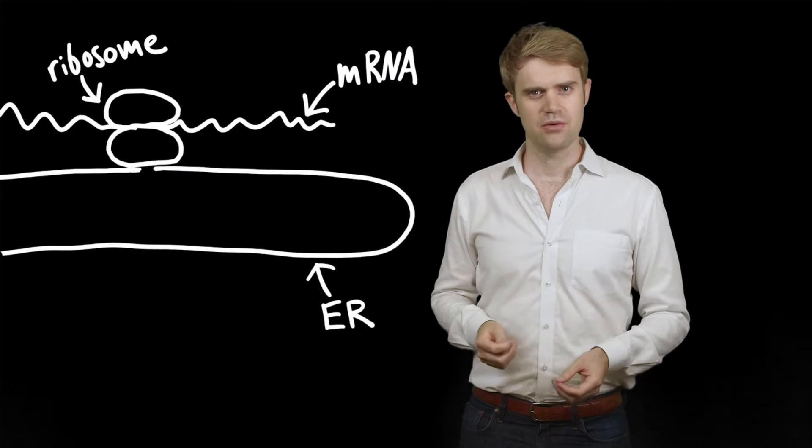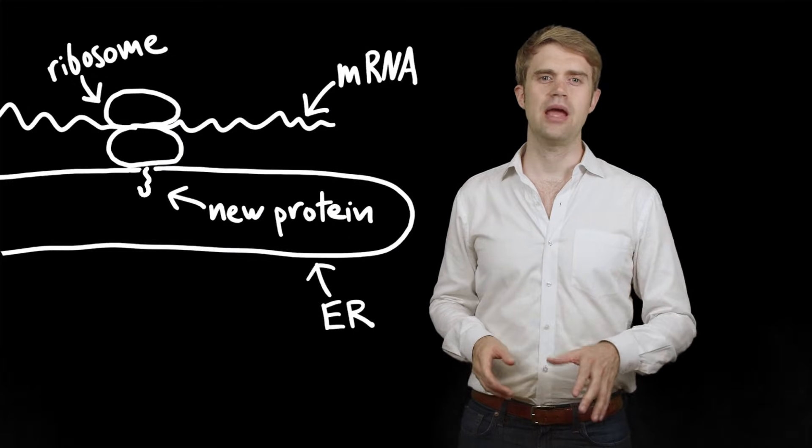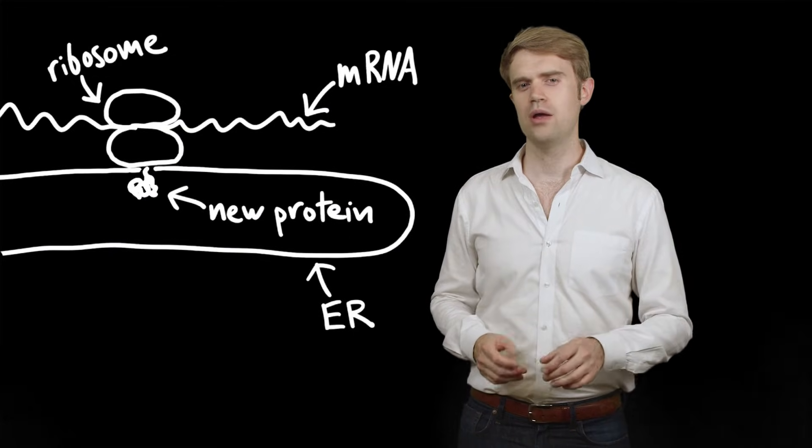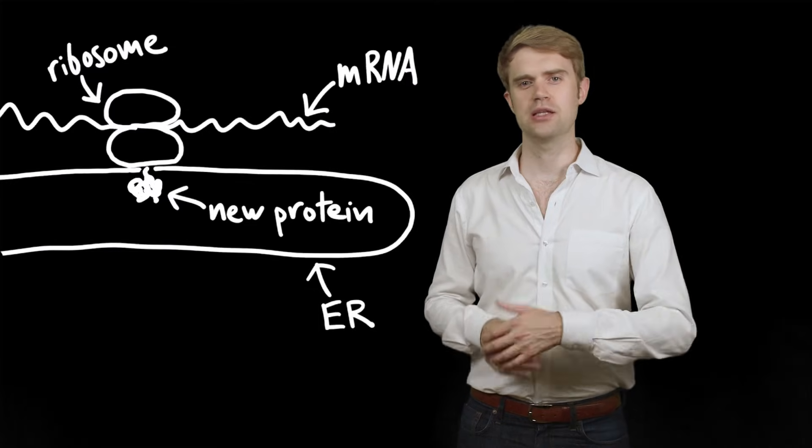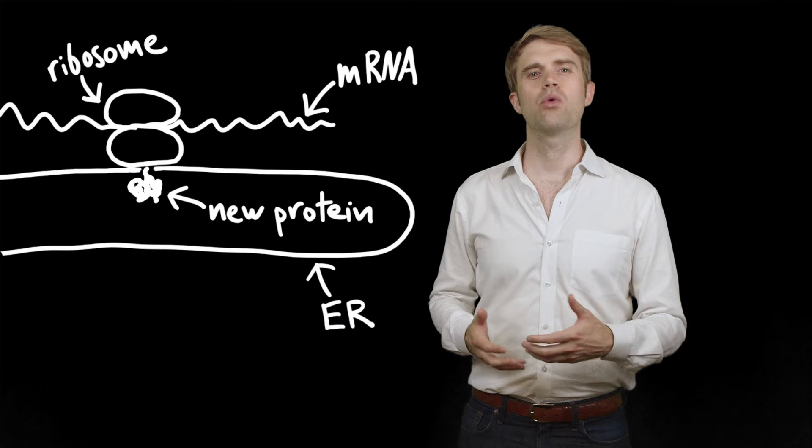Now, the protein that just got made, we can't see it because it came out of the bottom of the ribosome and got pushed through a hole into the endoplasmic reticulum, or ER, which is kind of like a massive network of pipes.